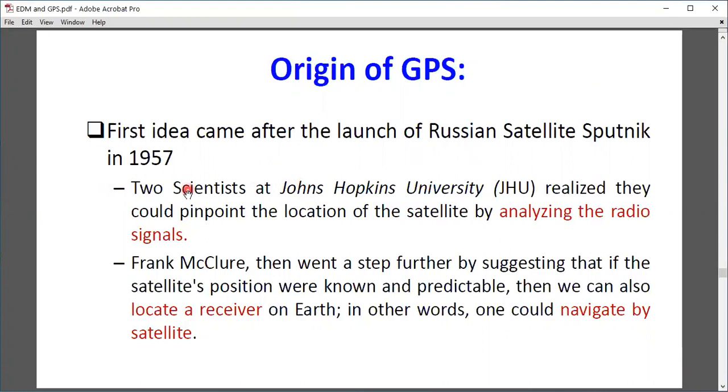Origin of GPS: The first idea came after the launch of Russian satellite Sputnik in 1957. Two scientists at Johns Hopkins University realized they could pinpoint the location of the satellite by analyzing the radio signals. Scientist Frank McClure then went a step further by suggesting that if the satellite's position were known and predictable, then we can also locate a receiver on Earth. In other words, one could navigate by satellite.